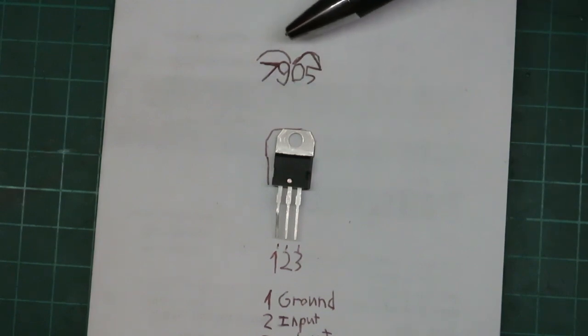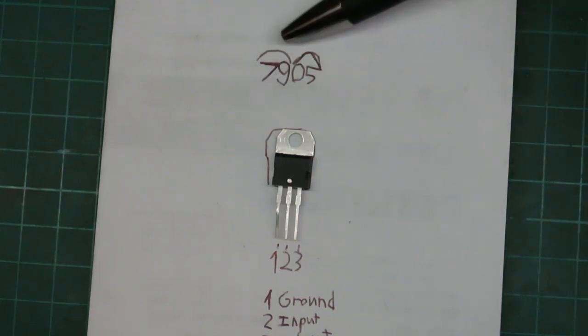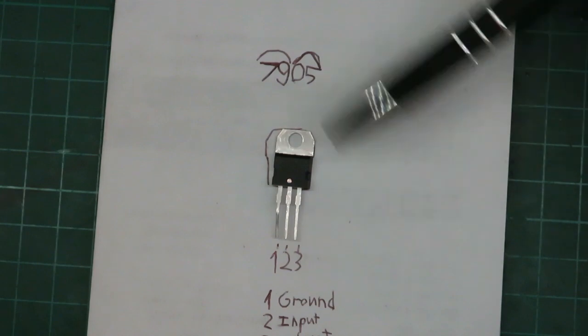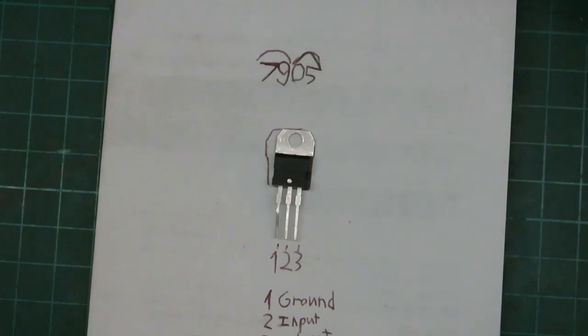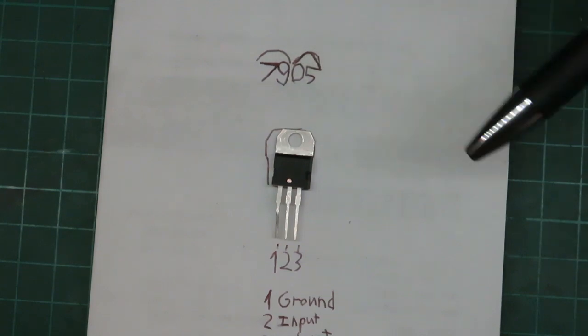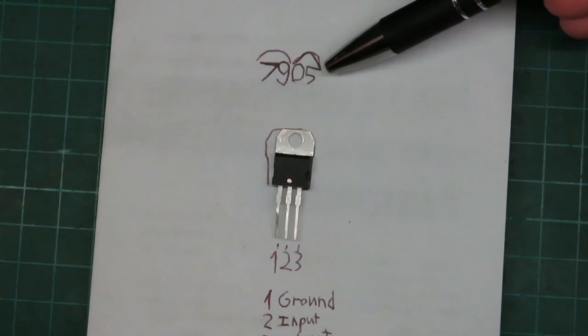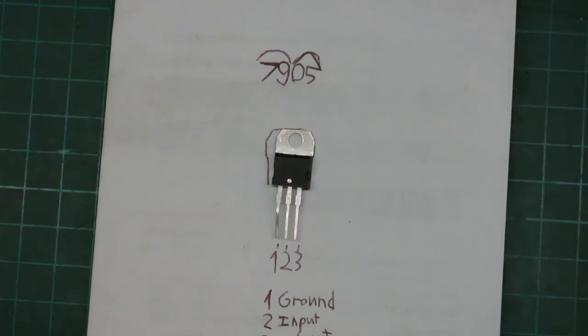For the numbering, this is 7905. That indicates it's a negative voltage regulator. We'll be doing a future YouTube video on how to make a negative voltage supply, but right now we're just going to be focusing on the negative voltage regulator. The 05, similarly with the positive voltage regulator, will put out negative 5 volts. So let's wire this up.